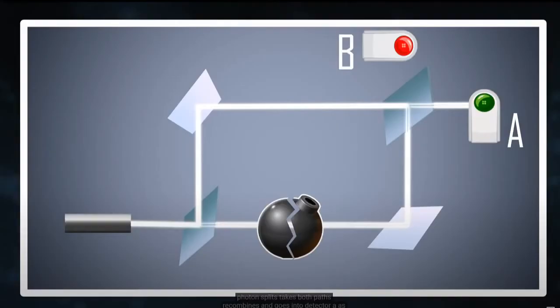Scenario number two: The bomb did not detect a photon and the photon went to detector A. What happened is the photon wave function passed both upper and lower paths without interaction. This means the bomb is a dud.